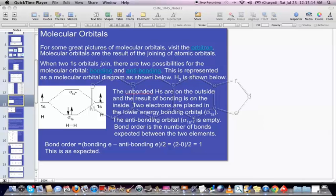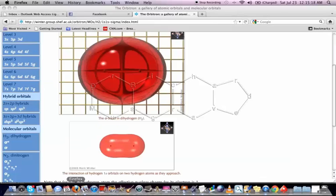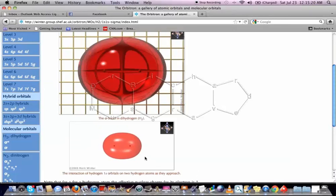Alright, let's look at some pictures of seeing how the 1s orbitals combine. And you can see these are two separate 1s orbitals and they combine, and this is called a sigma bond. So that's what we get, that's a bonding orbital right there.